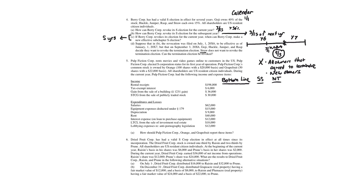Going through the items: rental receipts are ordinary income — lumped into the bottom line. Tax-exempt interest is a non-taxable item; it affects basis but isn't taxed, and it goes on Schedule K and the K-1. Gain from the sale of a building — Section 1231 — is separately stated. Short-term capital gain: all capital gains and Section 1231 items are always separately stated. Salaries are a normal business deduction — bottom line for an S-corporation.